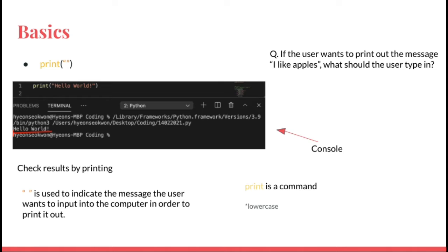You first will want to know how to check the results after typing in codes. Print is a type of command used in Python. The speech bubbles are used to indicate the message the user wants to input into the computer in order to print it out.